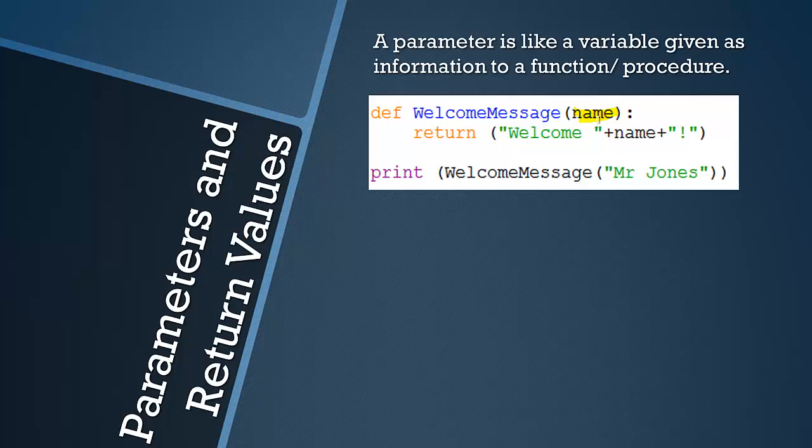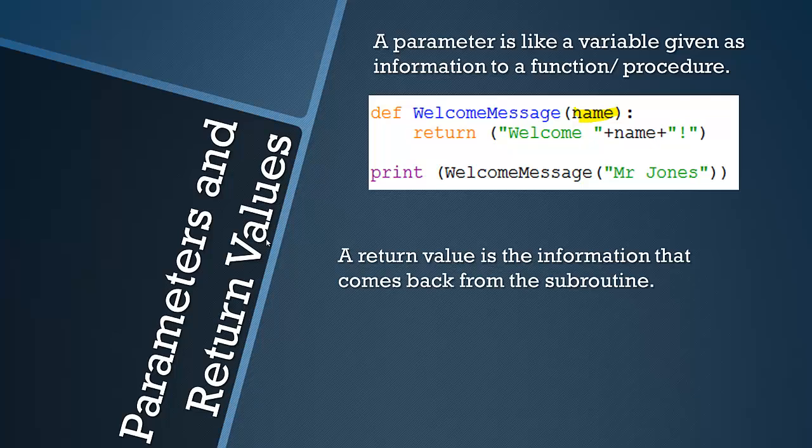So the parameter here is quite clearly, if you understood the definition, it's quite clearly name. This is the variable given as information. And you can see here it's being used as a variable in this return value. And here we're basically telling the function what our parameter is and what we're giving to the program. I'm explaining this quite badly because I'm not teaching how to code, I'm teaching you the theory behind it. So if you don't understand this that's fine but as long as you understand it in your given programming language.